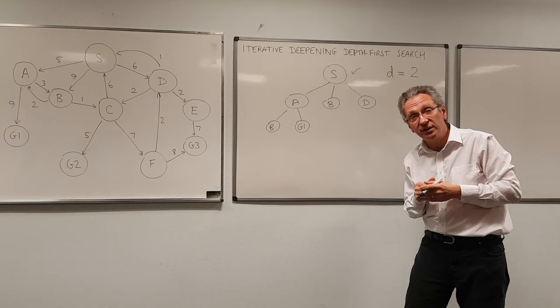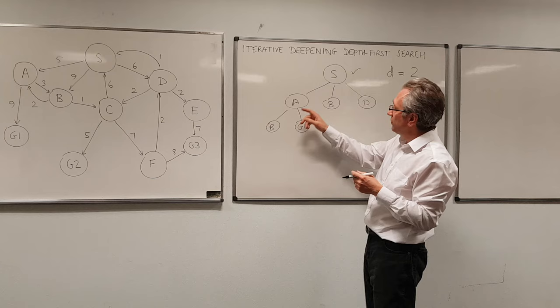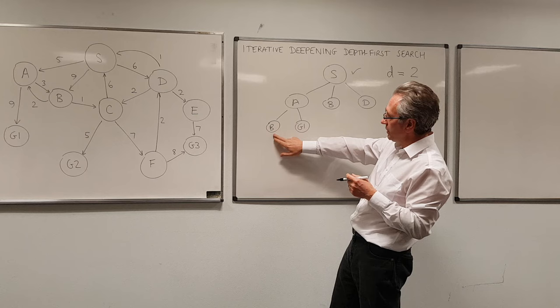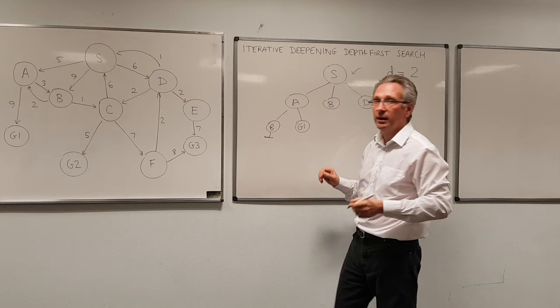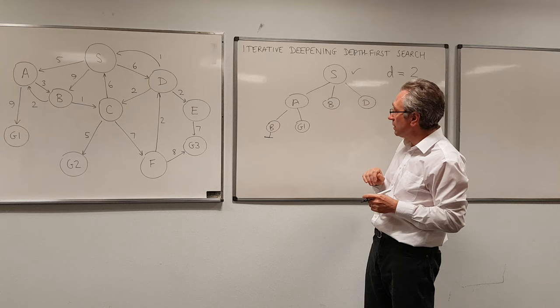What I now do, because we're doing depth first search, I don't look at these yet. I'll look here and say, is that the goal state? No, it's not, but it's at the depth limit. So therefore I treat that as a dead end. I don't expand it. Now I look at this node and say, is it the goal? Oh, yes it is. Excellent.